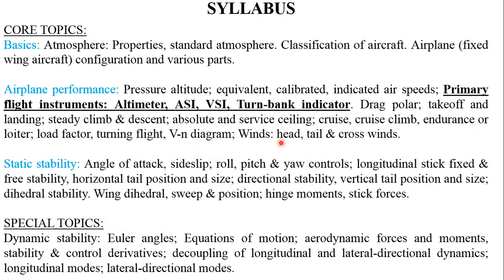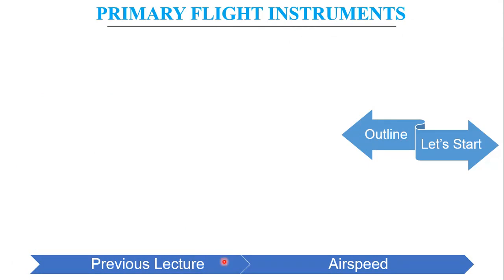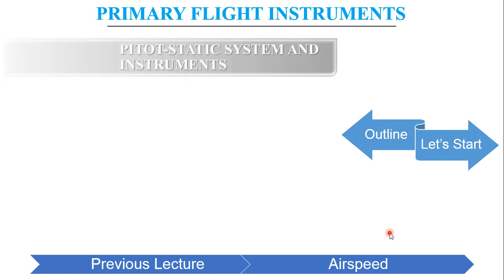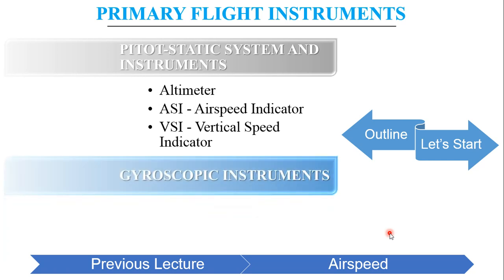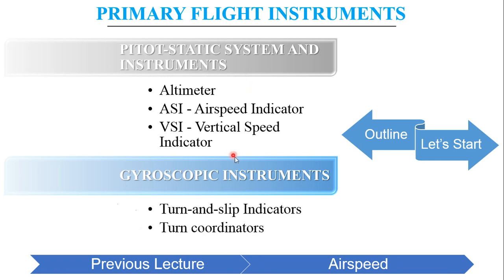We are following the flight mechanics syllabus for GATE aerospace engineering, and we have completed up to this particular topic. In this session we will be focusing on this portion of the syllabus. Previously we learned about airspeeds and its types. In this session we will be focusing on primary flight instruments, categorized into two categories: the pitot static system and its instruments, and the gyroscopic instruments.